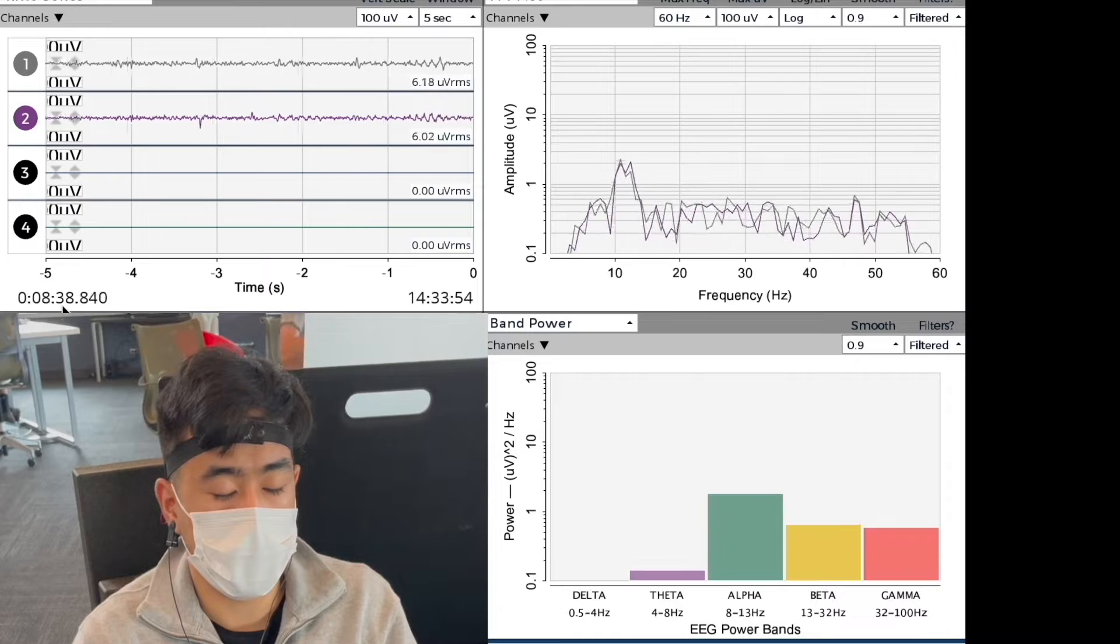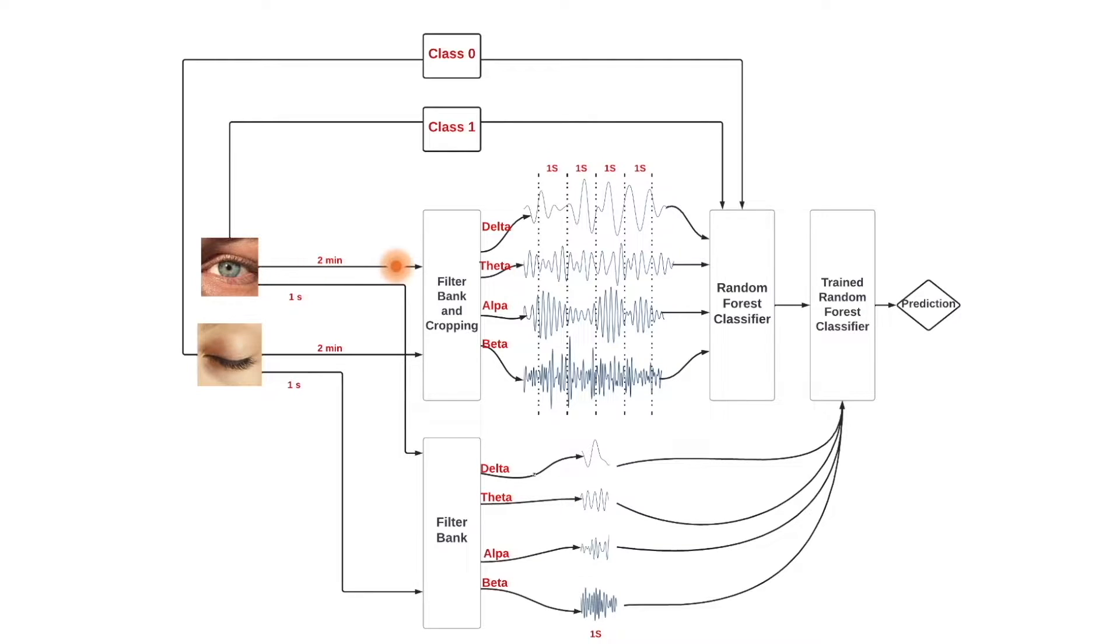We use this information to train our algorithm. The person has their eyes open for two minutes and then the signal is collected and divided into four frequency bands through band-pass filtering. Each band is divided into one second periods which we use as features to train our random forest classifier.